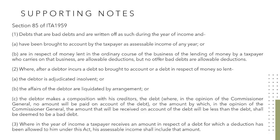If you go through Section 85 of ITA 1959, it talks about how you will be able to claim a bad debt as an allowable deduction. The first subsection states that bad debts that are written off as such during that year of income and have been brought to account by the taxpayer as assessable income of any year — which means it's already been claimed as part of assessable income before you can claim it as bad debts.